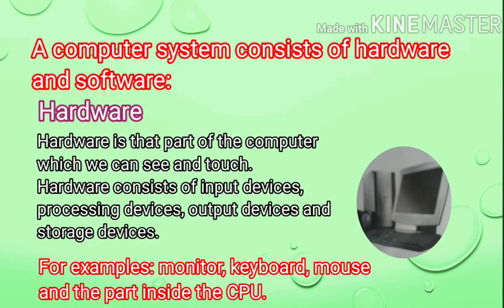A computer system consists of hardware and software. Hardware is that part of the computer which we can see and touch. Hardware consists of input devices, processing devices, output devices, and storage devices.